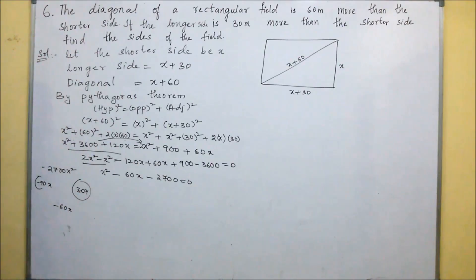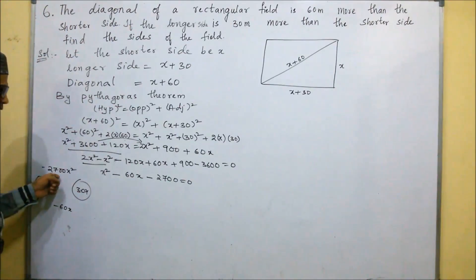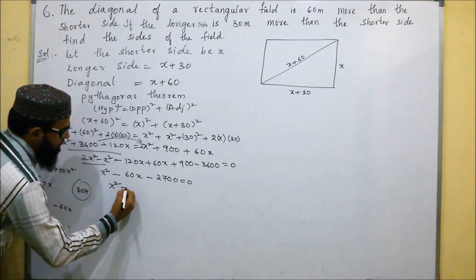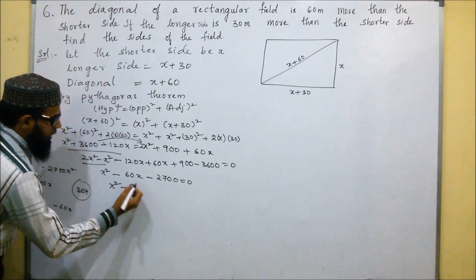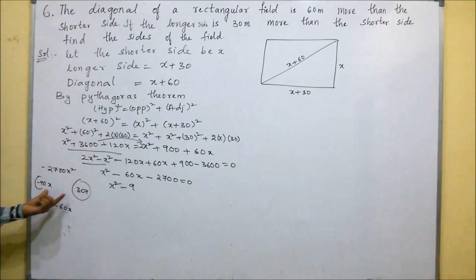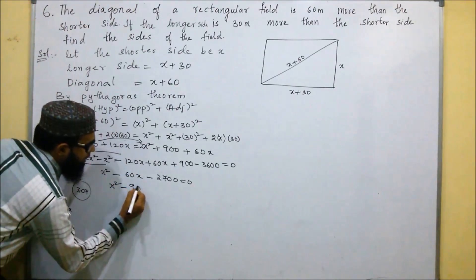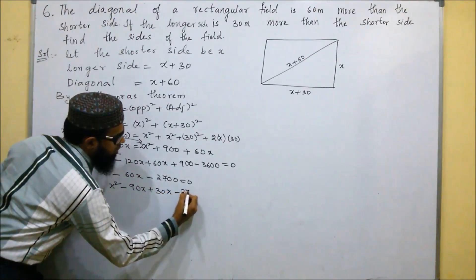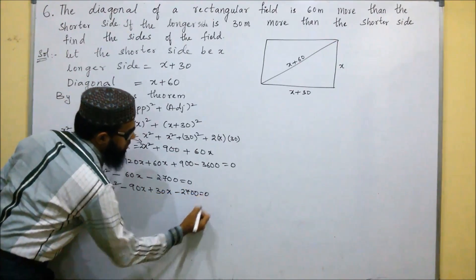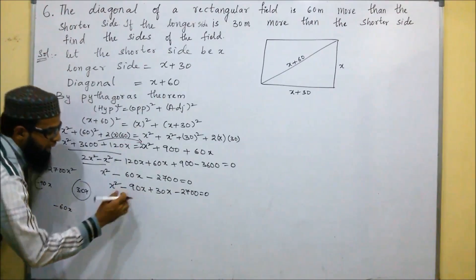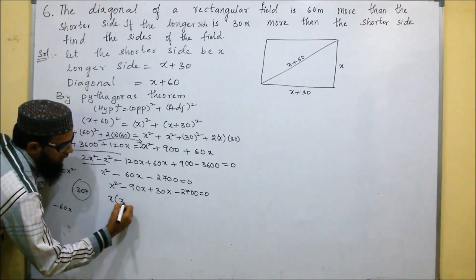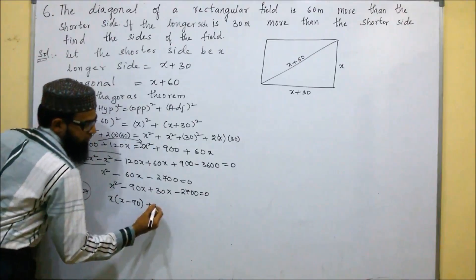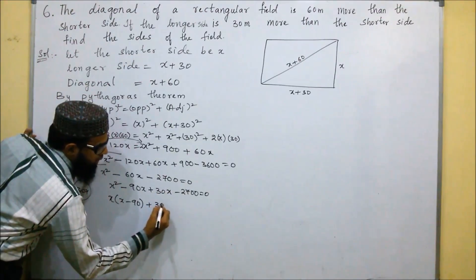If we subtract 30 from 90 we get 60, and if we multiply we get minus 2700. So in place of minus 60x, we substitute minus 90x plus 30x. This gives x² minus 90x plus 30x minus 2700 equals 0. Taking x common: x(x minus 90) plus 30(x minus 90) equals 0.